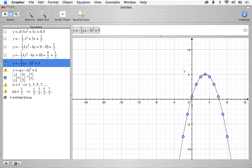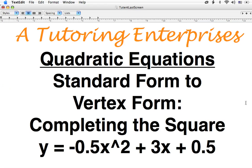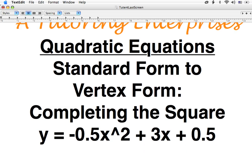I hope you enjoyed the video. Let's go over to our final ending screens here. This has been A Tutoring Enterprises. We've been looking at quadratic equations and looking at changing the standard form into the vertex form by completing the square. We specifically looked at y equals negative 0.5x squared plus 3x plus 0.5.